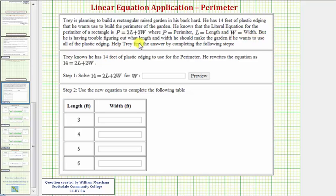But he is having trouble figuring out what length and width he should make the garden if he wants to use all the plastic edging. Help Trey find out the answer by completing the following steps. So first, Trey knows he has 14 feet of plastic edging to use for the perimeter. He rewrites the equation as 14 equals 2L plus 2W.